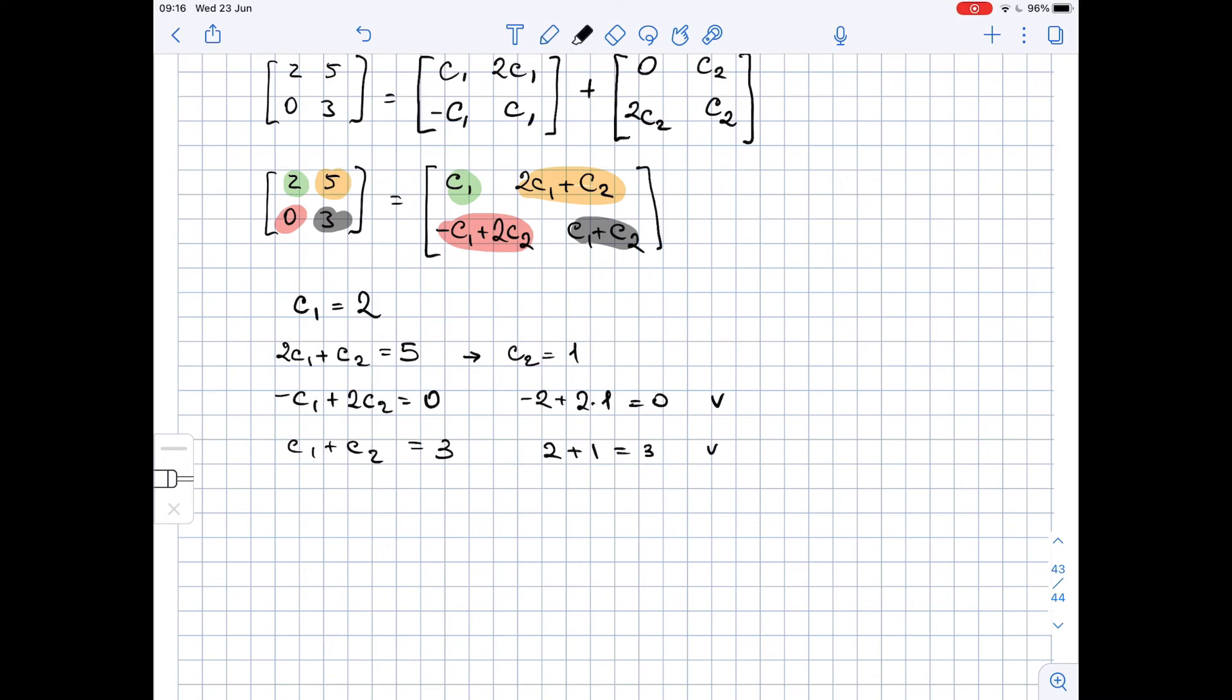So the answers here are C1 equals 2 and C2 equals 1, so we can write down that matrix B equals 2 times A1 plus A2.